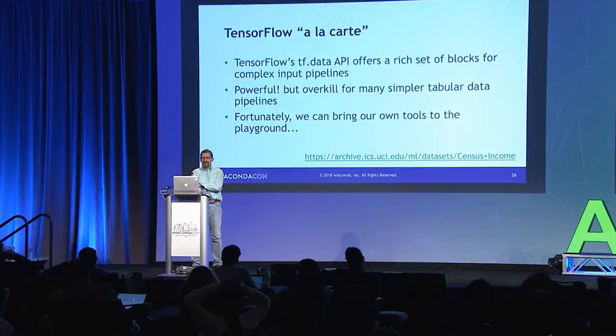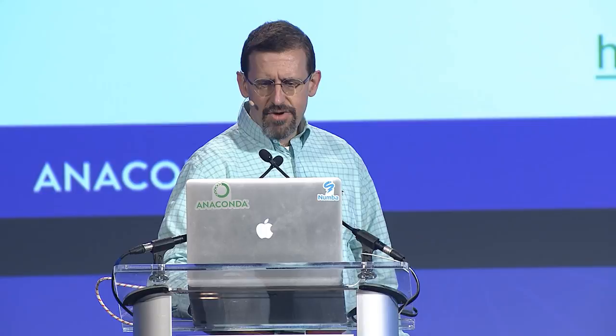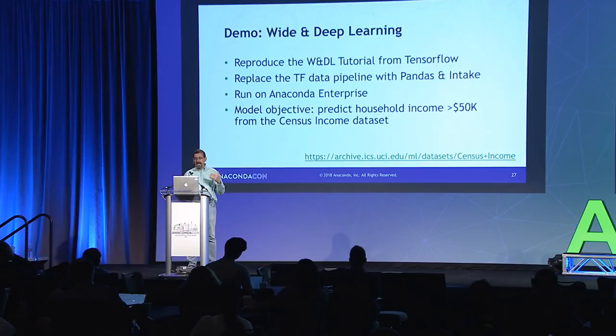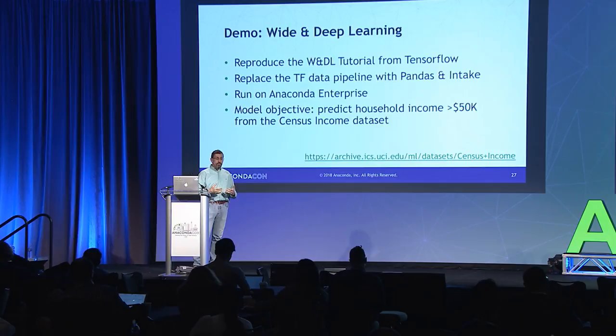I want you to feel free to use the pieces of TensorFlow that work for you and not reinvent the wheel when you don't have to. What I've done is reproduced a wide and deep learning project that the Google TensorFlow team has built. They have a tutorial on this. The purpose of the model is to take the well-known census income dataset and predict whether a household has an income greater than $50K or less, based on other features in the dataset. I wanted to reproduce this tutorial on Anaconda Enterprise, but I wanted to use the tools I was already familiar with: Pandas, and a package called Intake.